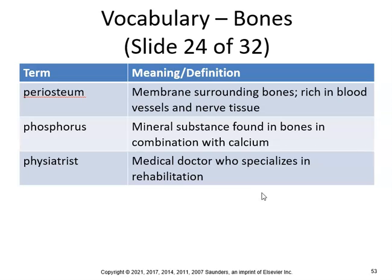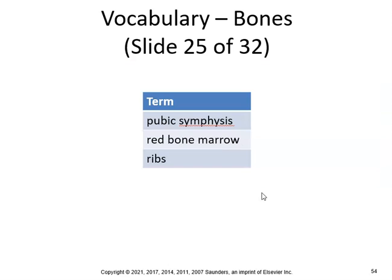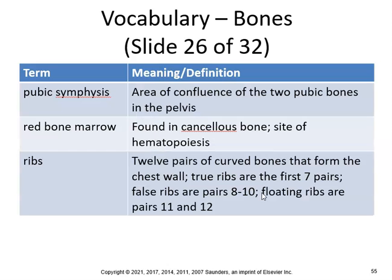The periosteum is a membrane surrounding bones, rich in blood vessels and nerve tissue. Phosphorus is a mineral substance found in bones in combination with calcium — again, don't drink too much diet soda. A physiatrist is a medical doctor specializing in rehabilitation.